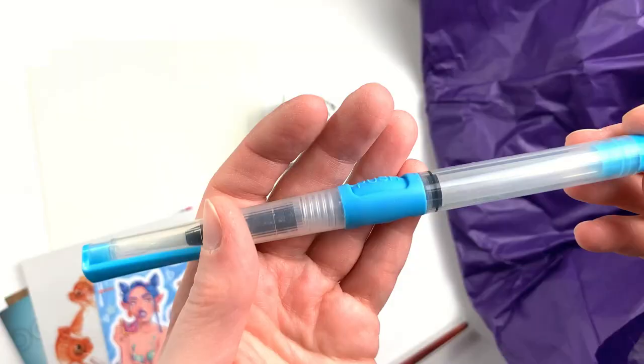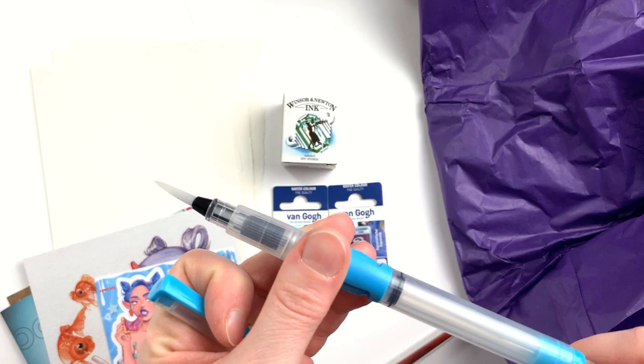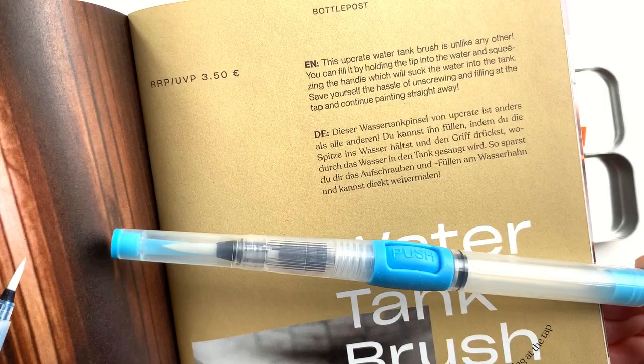The next item is a water tank brush. I've not used one like this before, it seems to have a piston filling system. Apparently you can just put the tip down in water and pull up the piston to fill it without having to get up and go to the sink.